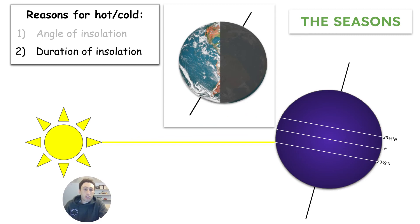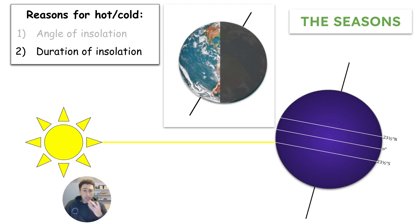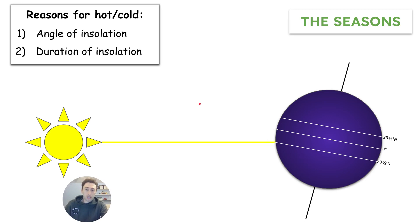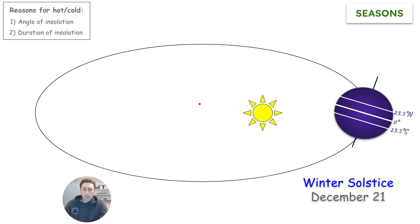The second way is the duration of insolation, which means how many hours of daylight that place gets. Since the Earth is tilted, for instance in the Southern Hemisphere, they're getting more duration of insolation. Since the Earth stays tilted as it orbits around the sun, you will have the different seasons.